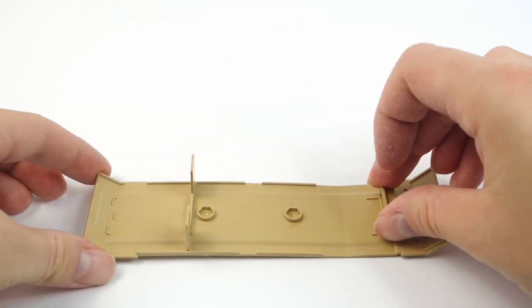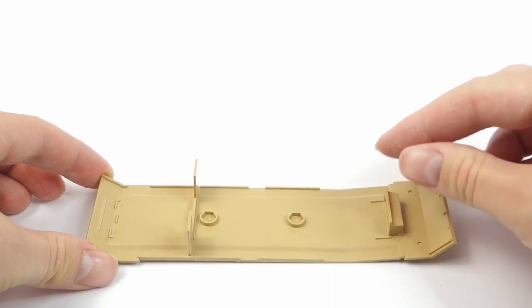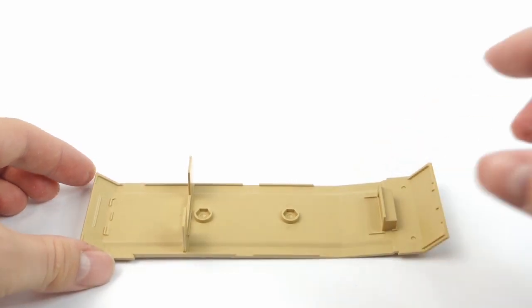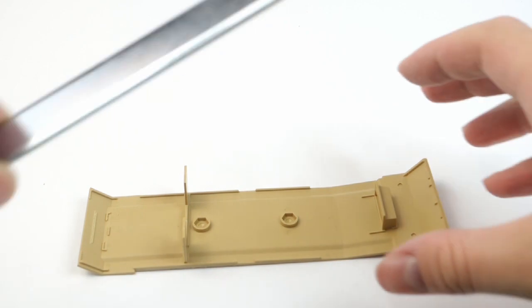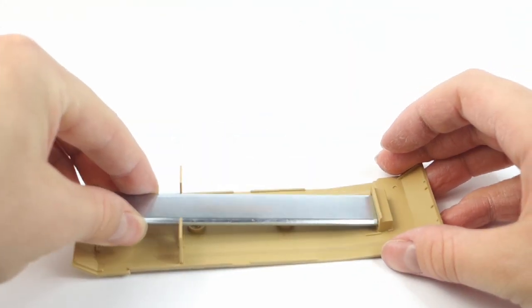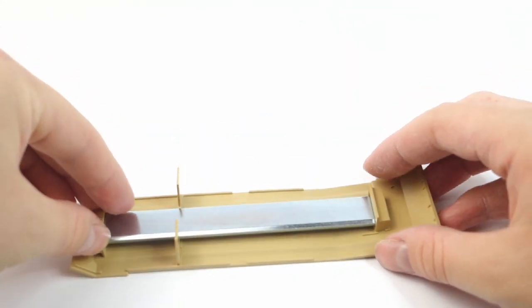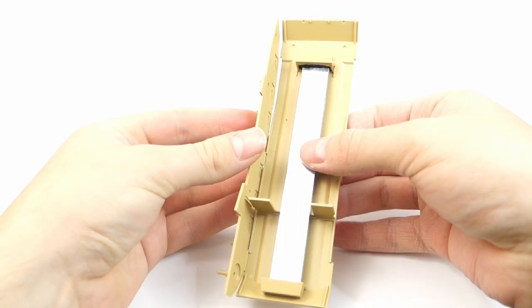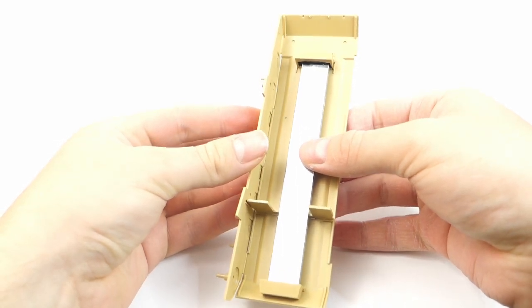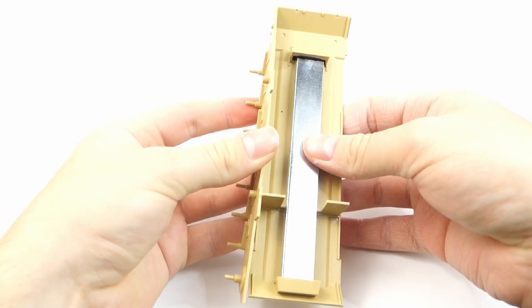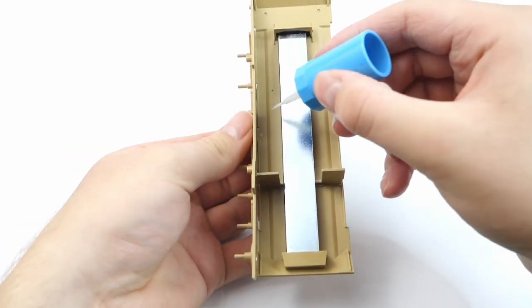The metal weight is a unique feature of the Tamiya 1:35 scale models. I don't know why they are putting them in the kits, but I really like it. It's nice when the model weighs a little. Attaching of the sides of the hull needs some attention, but as I said earlier, the support inside of the hull helps a lot to correctly position the side plates.